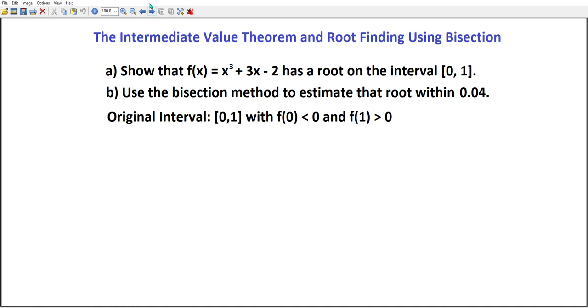The second task is to find the value of that root within 0.04. Now the original interval was [0,1], with f(0) < 0 and f(1) > 0. The reason this is called the bisection method is we're going to cut that interval in half. So we find the midpoint, which is (0+1)/2, or 0.5.